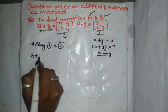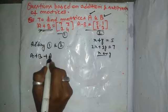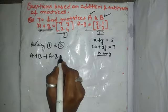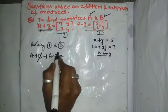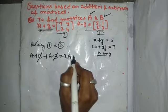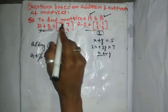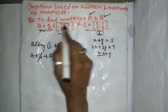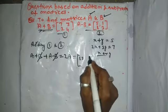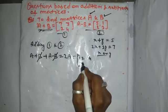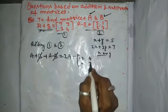A plus B plus A minus B that is equal to, B gets cancel, 2A. Now, we will add the corresponding elements. 7 plus 5, well 3 plus 1, 4, 2 plus 2, 4 and 4 plus 3, 7.